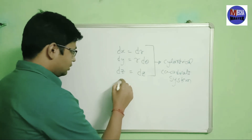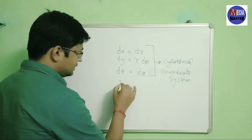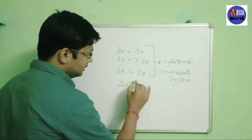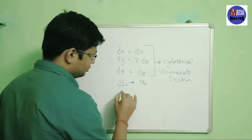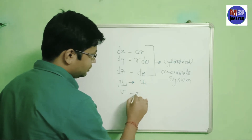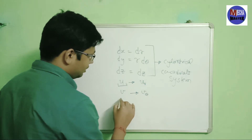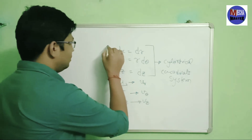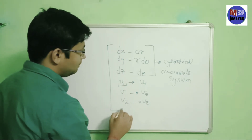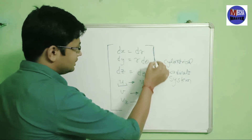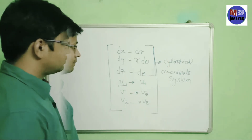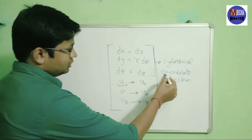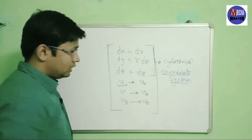For the velocity, u in the Cartesian coordinate has to be changed to vr, v has to be changed to vθ, and vz has no change. For the trick, you have to remember all these things. If you learn this, you can easily change the Cartesian coordinate system into polar coordinate system.